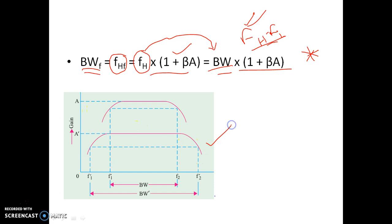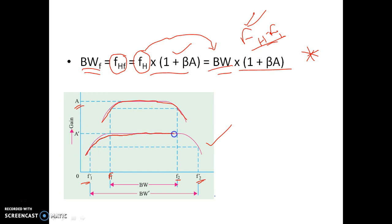As I explained in my previous videos, F1 is the lower cut-off frequency without feedback, F2 is the higher cut-off frequency without feedback, F2-dash is the higher cut-off frequency with feedback, and F1-dash is the lower cut-off frequency with feedback. The graph A is the gain versus frequency graph without feedback — for this case gain is very high but bandwidth is lower. For the second graph with feedback, bandwidth is very high, while bandwidth without feedback was only this much amount.